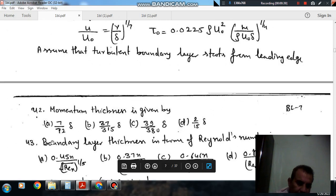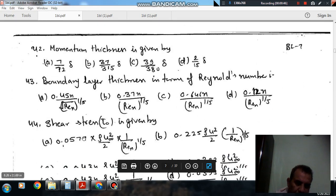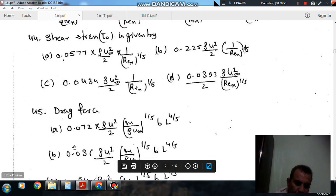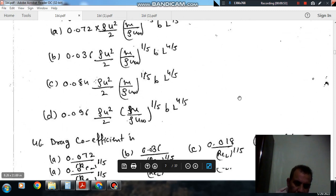The momentum thickness is given by these options. Boundary layer thickness in terms of Reynolds number is given by these options. Shear stress is given by these options. Drag force, these are the options. Drag coefficient, these are the options.